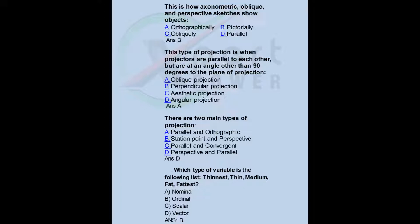There are two main types of projection: a) parallel and orthographic, b) station point and perspective, c) parallel and convergent, d) perspective and parallel. Answer: D. Which type of variable is the following list — thinnest, thin, medium, fat, fattest? a) nominal, b) ordinal, c) scalar, d) vector. Answer: B.